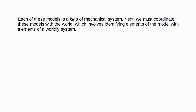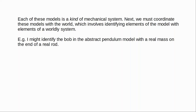For the model of the pendulum, I might identify the bob in the abstract model with a real mass on the end of a real string. You have the abstract model of a pendulum, which is defined mathematically, and then you can take some real system — like in a clock — and identify parts of this abstract model with parts of the real system. Now you have a model that represents various systems in the world, such as the actual pendulum in a clock.